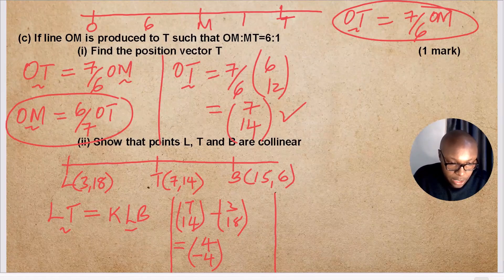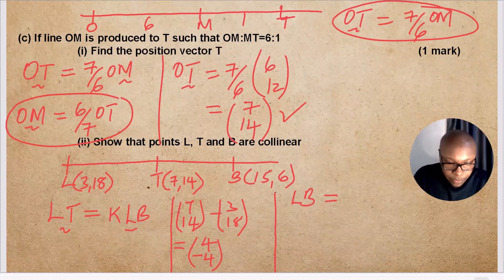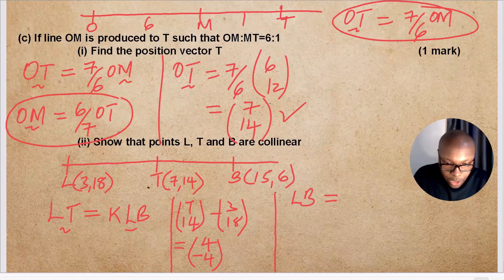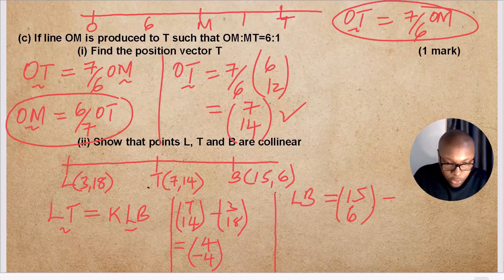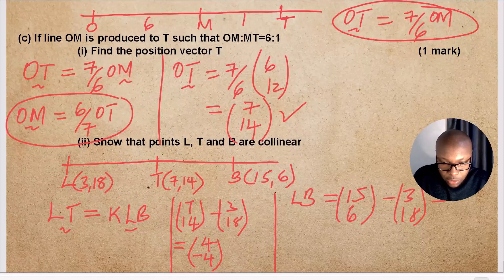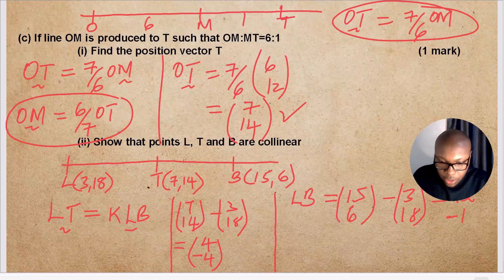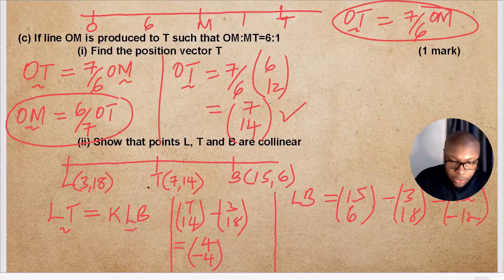Then find vector LB = position vector of B minus position vector of L = (15, 6) − (3, 18) = (12, −12).